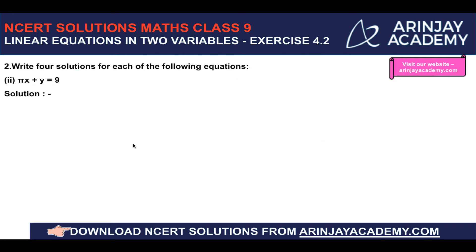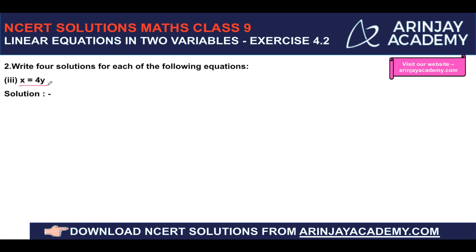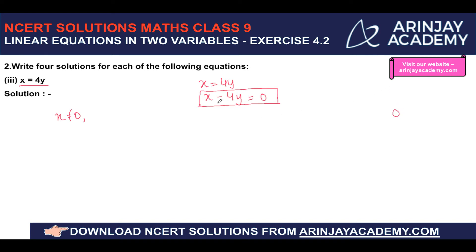Moving on, the equation given is x equal to 4y, which can be rewritten as x minus 4y equal to 0 — that is the standard form of a linear equation. Taking x equal to 0: 0 minus 4y equals 0, so y equals 0. The first solution is (0, 0).